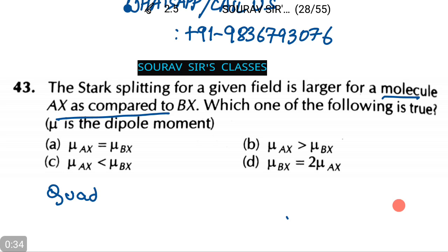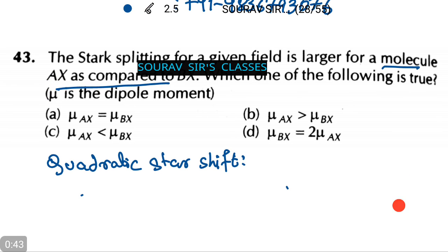We find that quadratic stark shift equals Δν_quad = (μE/h)² × [6m_j(8j² - 3) - 8j²(j² + 1)]